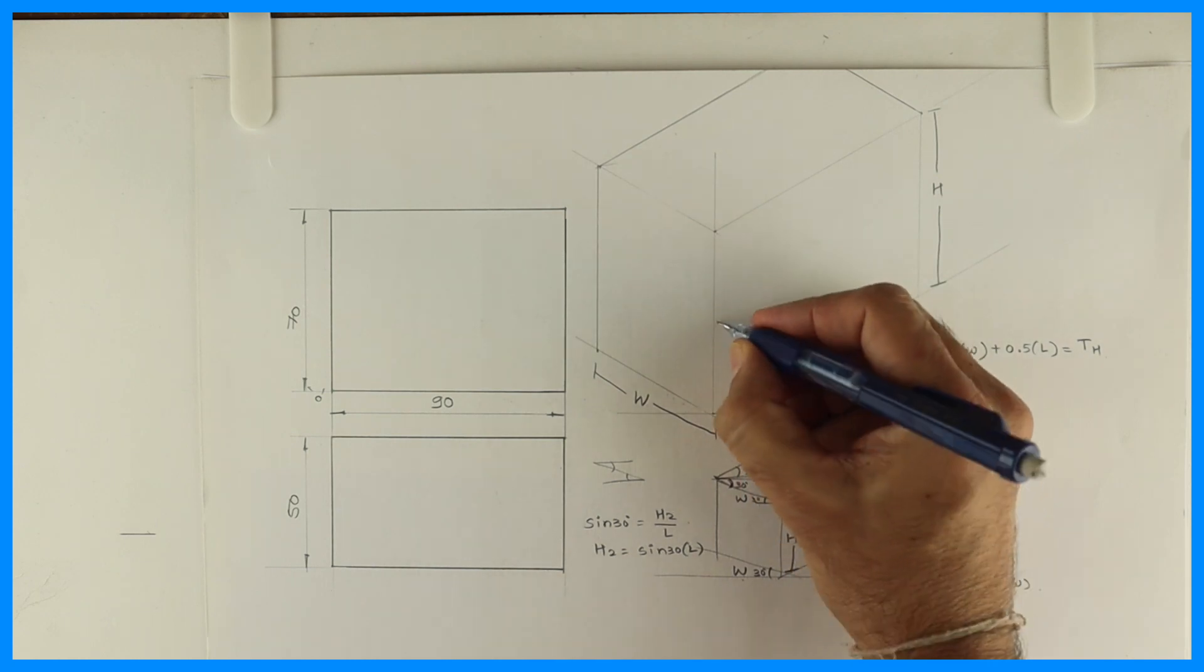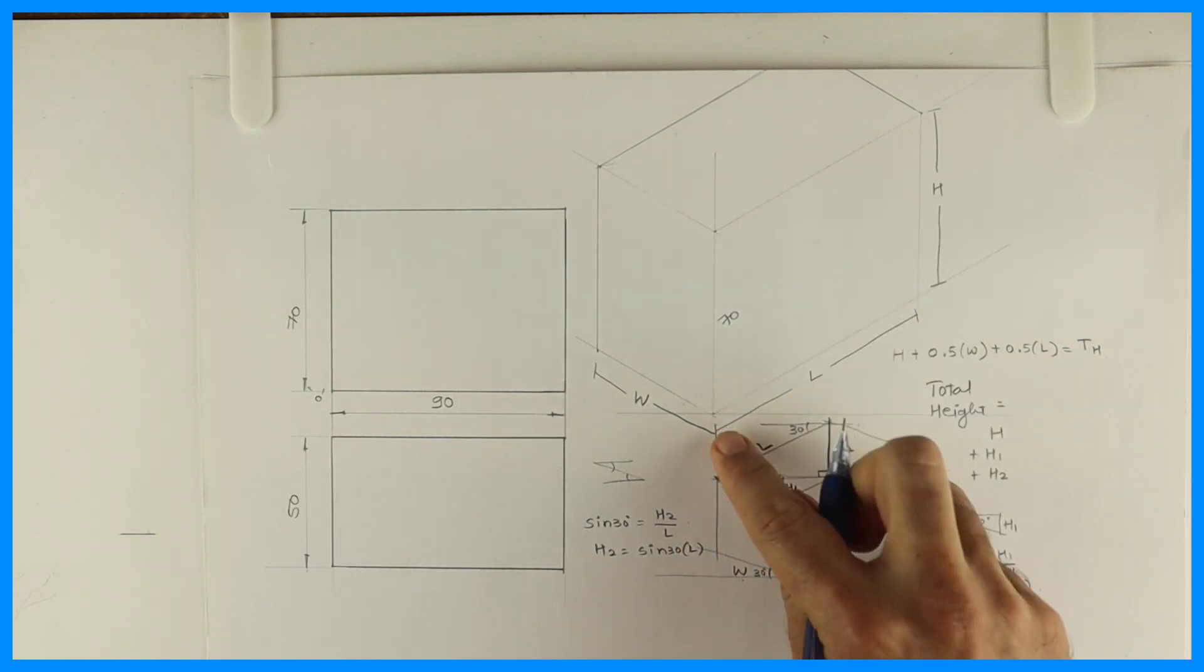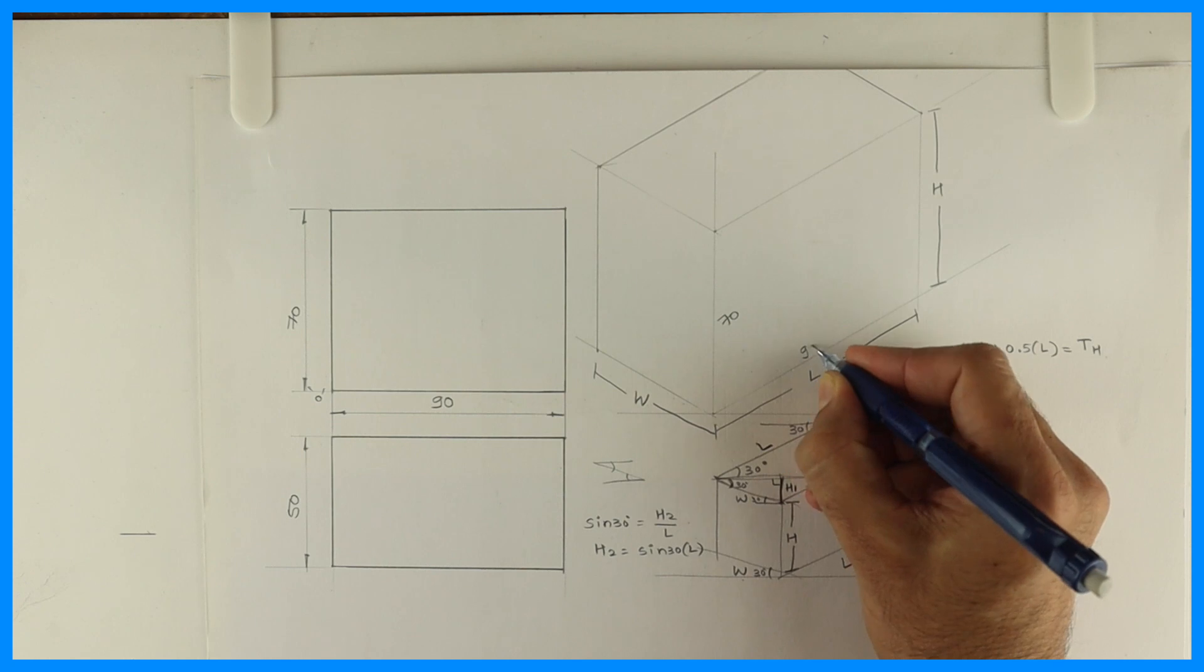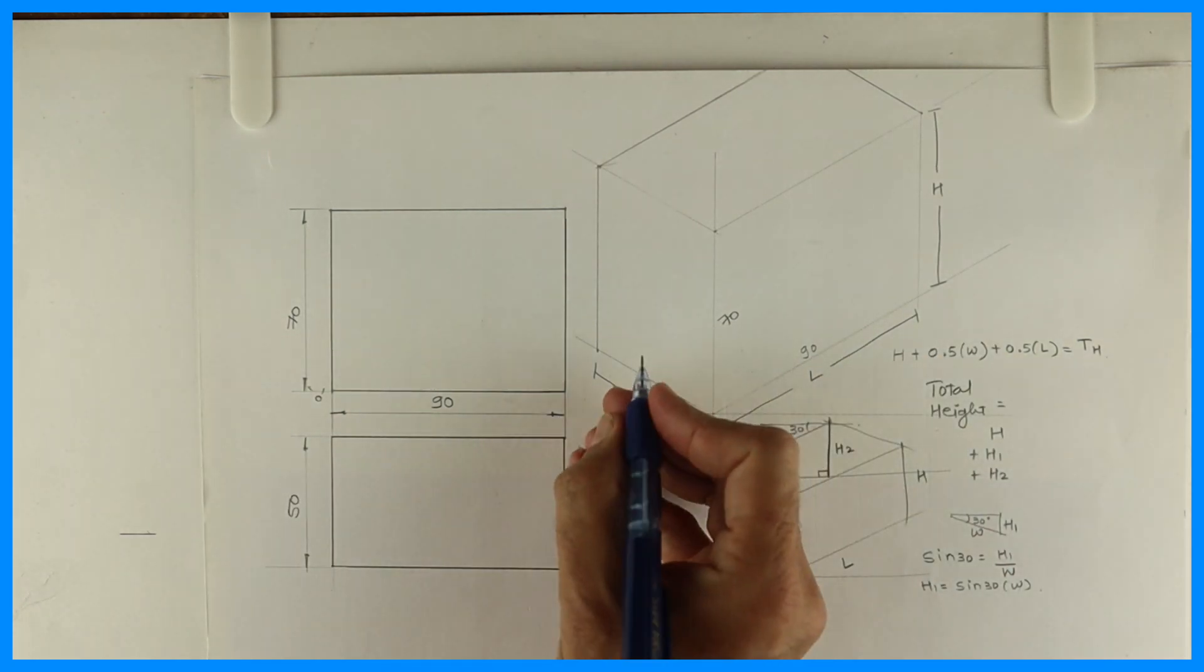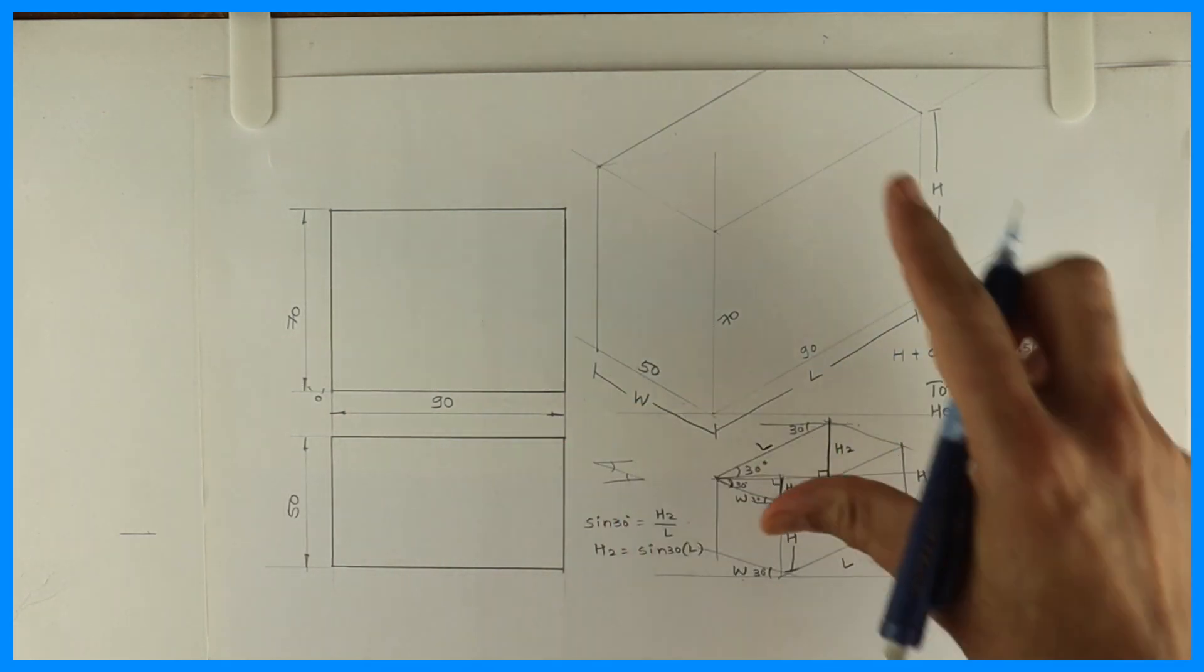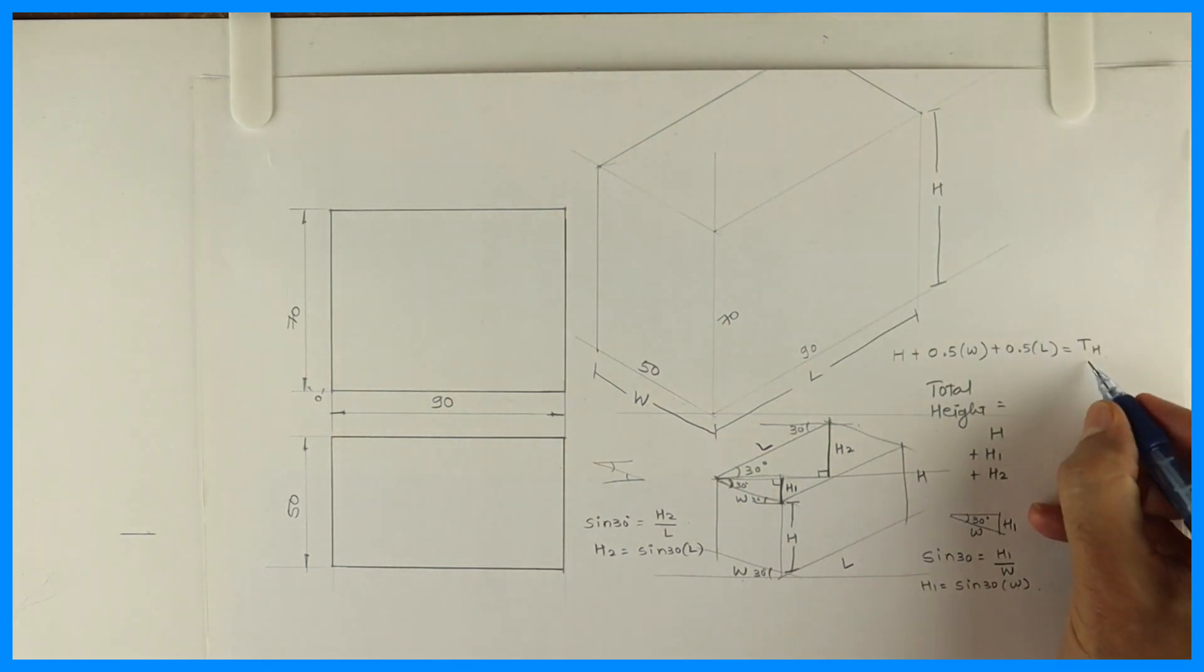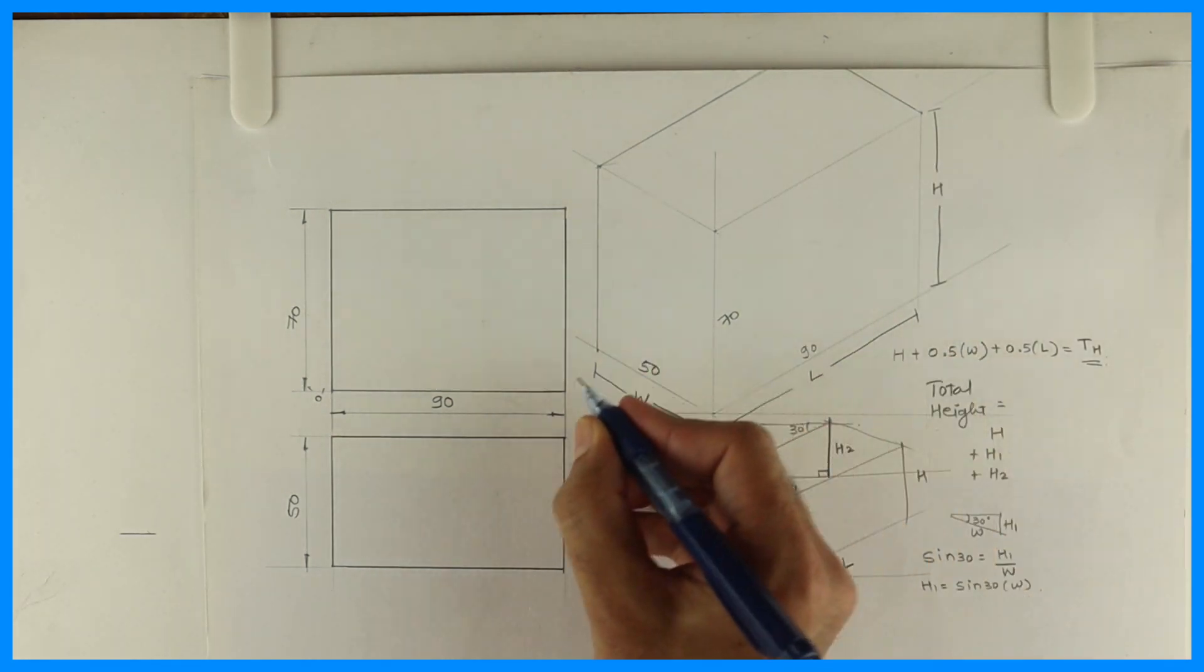See this. This is H which is 70. Length is 90. Width is 50.